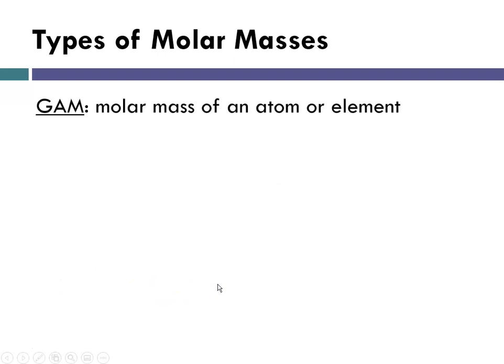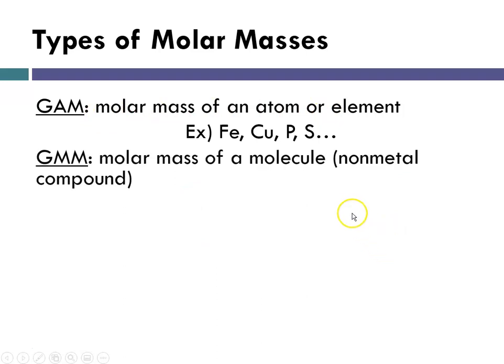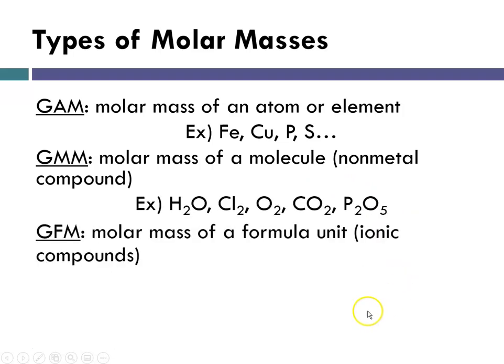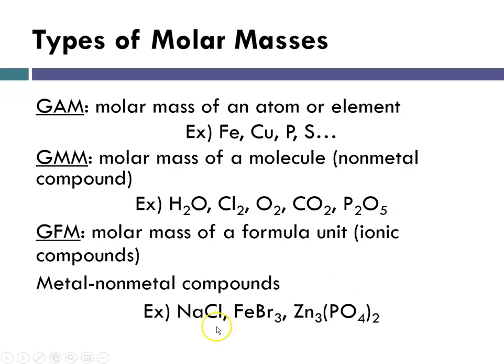So types of molar masses. Gram atomic mass is the molar mass of an atom or element. Gram molecular mass is the molar mass of a molecule, which is nonmetallic compounds. And the gram formula mass would be the molar mass for ionic compounds, metal, nonmetal compounds. And again, examples there.